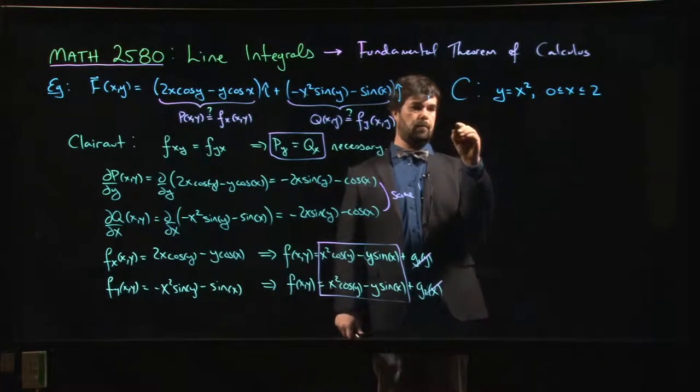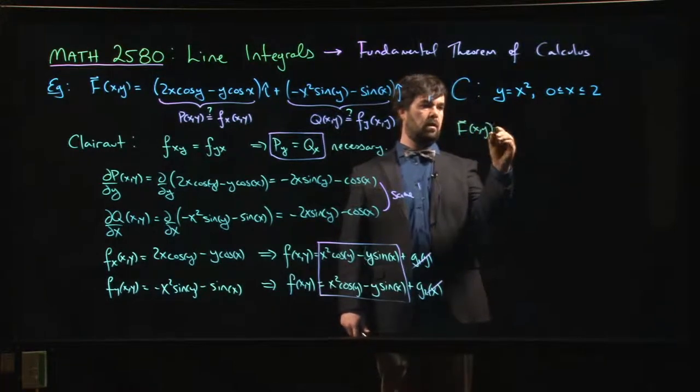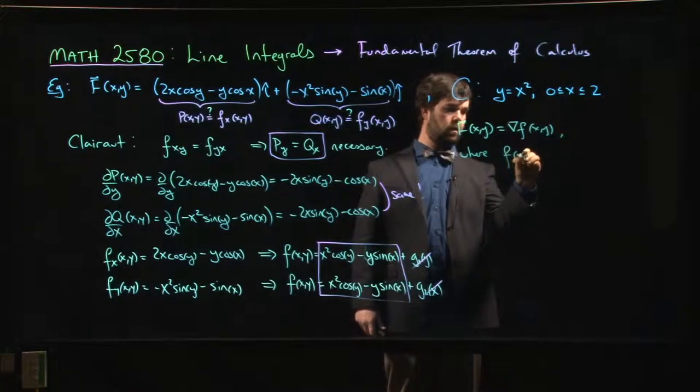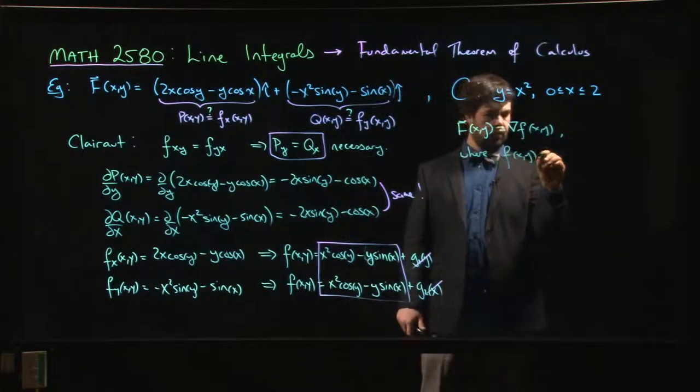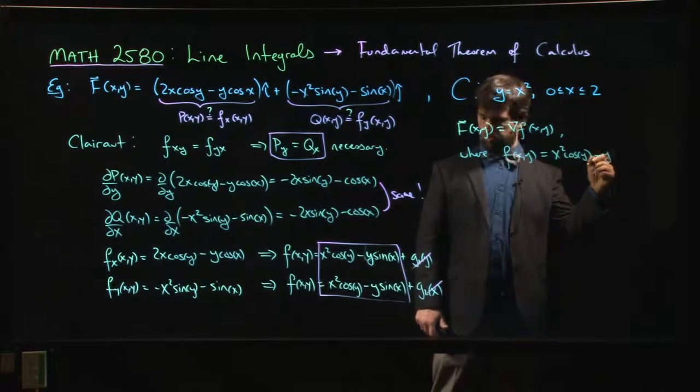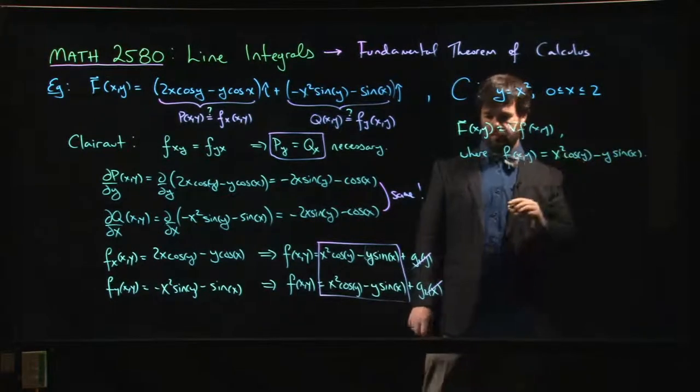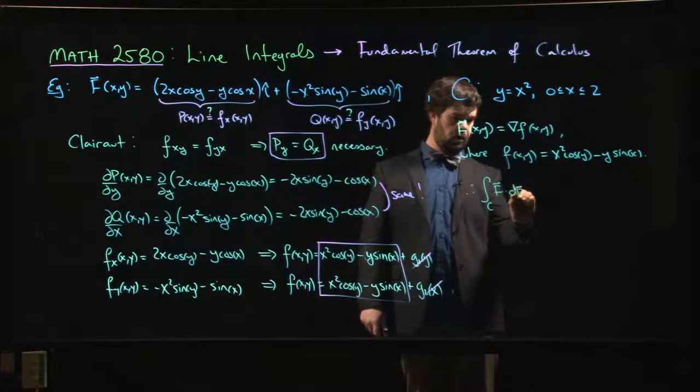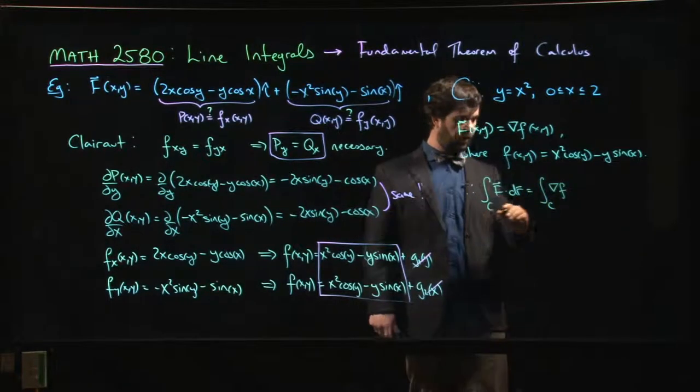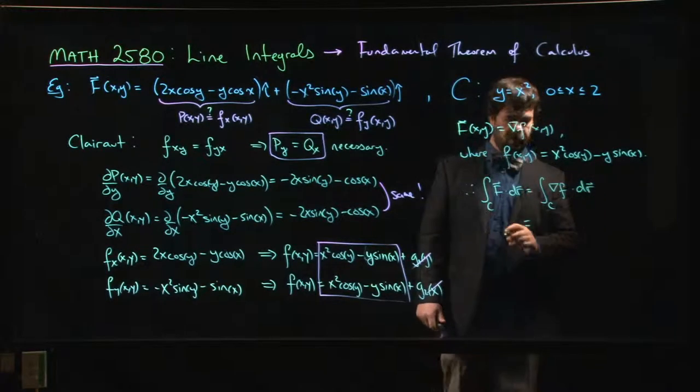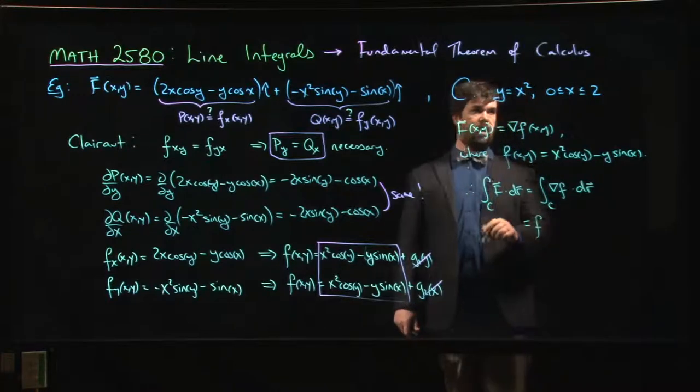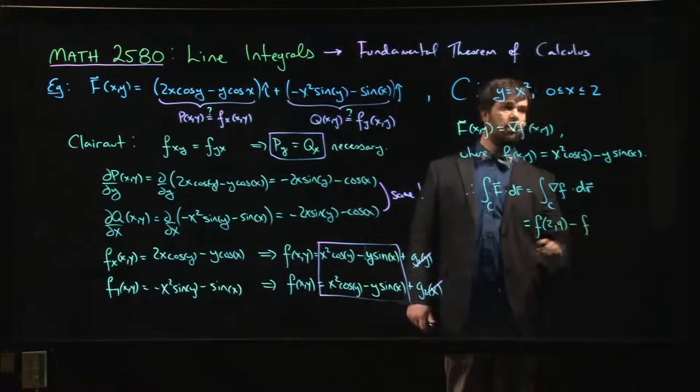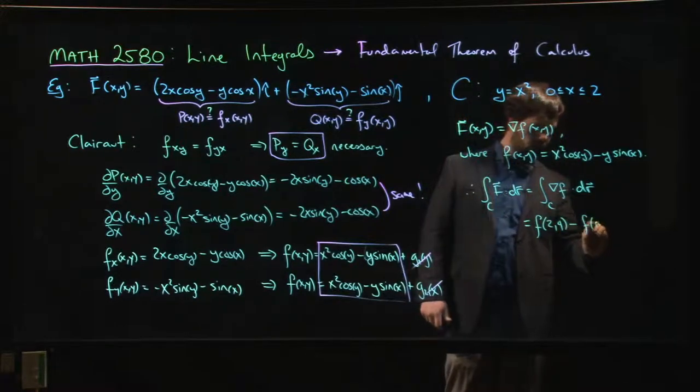So we can say that my vector field is the gradient of f, where f(x,y) is x squared cos y minus y sin x. That means that the integral along C of f dot dr, well that's the integral along C of the gradient of f dot dr. Fundamental theorem says that that should be f at the final point when x equals 2, y equals 4, so f at (2,4) minus the initial when x is 0 so is y, f at (0,0).